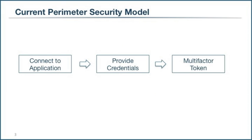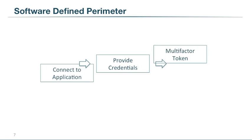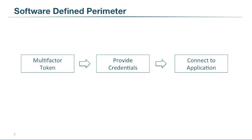Now that we have our solution requirements, let's actually go back and look at the current perimeter security model — remembering that any solution has to involve no secrets, be scalable, and work with data centers and clouds. Now if you look at this, you might think there's not much we can do, but from an information perspective we know the multi-factor token has the most amount of information. So one thing we could do is actually move it to the front of the sequence, and that changes the game quite a bit.